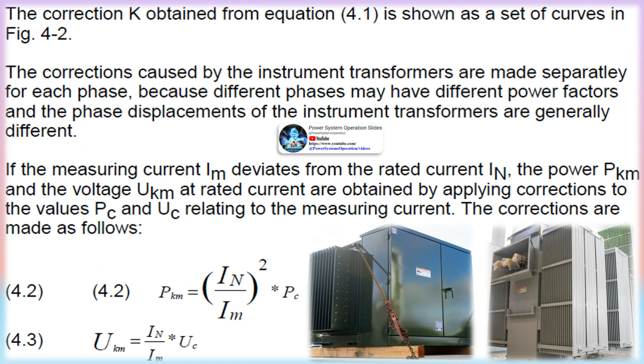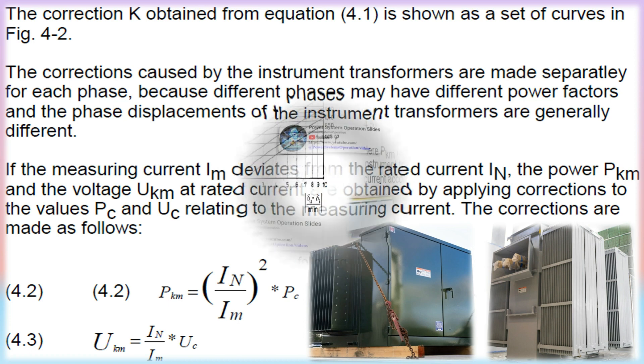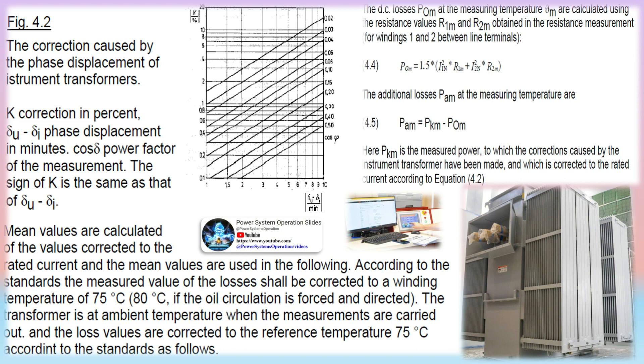Transformer winding resistance measurements are obtained by passing a known DC current through the winding under test and measuring the voltage drop across each terminal, ohms law. Modern test equipment for this purpose utilizes a Kelvin bridge to achieve results, you might think of a winding resistance test set as a very large low resistance ohmmeter DLRO.